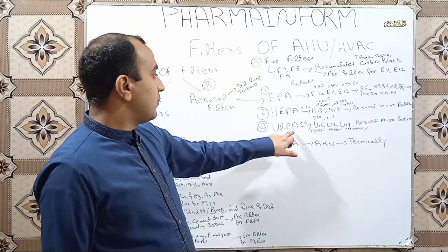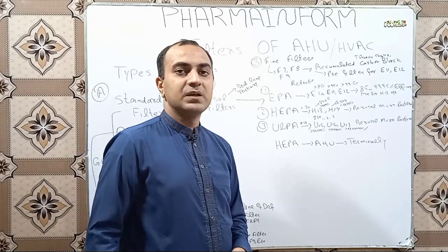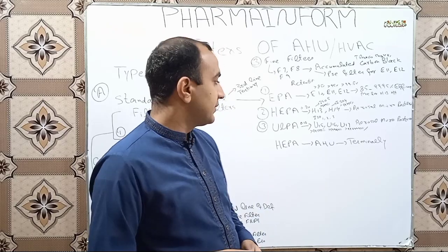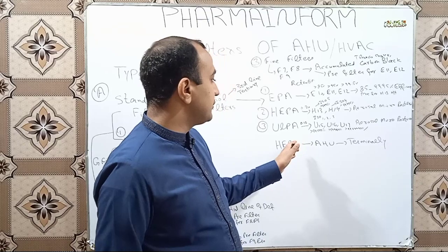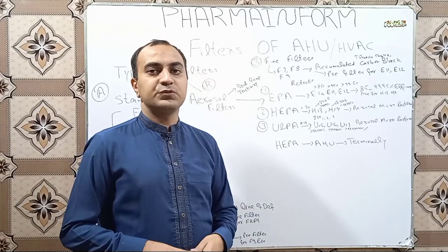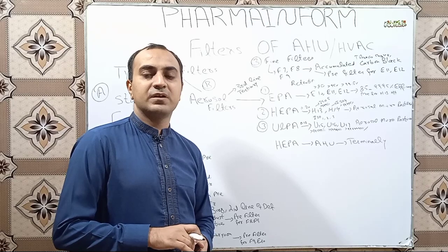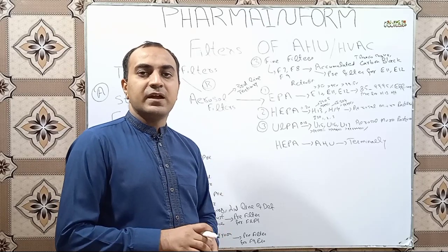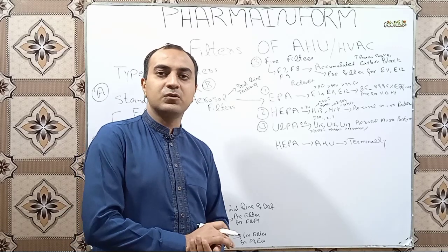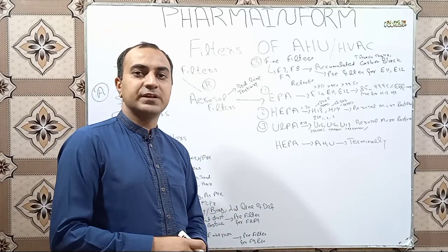These are the most sensitive filters, known as ULPA filters. HEPA and ULPA filters can be used terminally at the ducts or diffusers which supply air directly to rooms, and can also be used in the AHU to purify the air supply. That covers all the filters used for AHU. All these filters purify the air, remove contaminants and dust particles, and supply clean and purified air to the room. If you have any query, ask in the comment box, subscribe our channel, and share it with others.